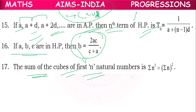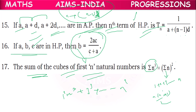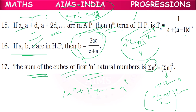The sum of cubes of the first n natural numbers — 1³ + 2³ + 3³ + … + n³ — is given by sigma n³ = (sigma n)² = [n(n+1)/2]², which equals n²(n+1)²/4. This is the formula for the sum of cubes of the first n natural numbers.